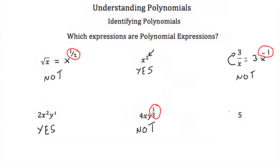Our last expression is just the number 5. Polynomials don't have to have variables — they usually do, but they don't have to. So this 5 is a monomial, and therefore qualifies as a polynomial. So yes, this would be a polynomial expression.